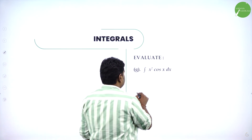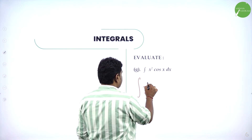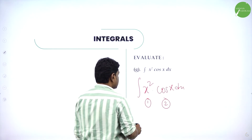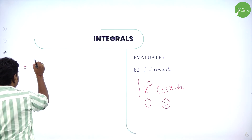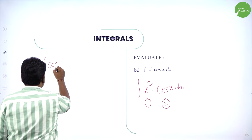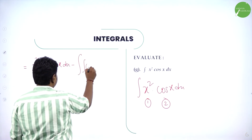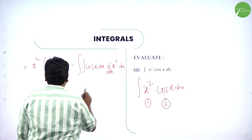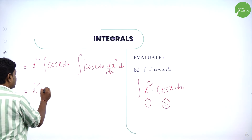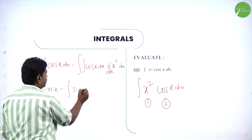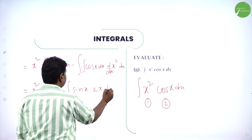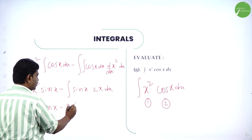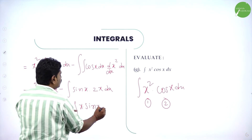Now: integration of x²·cos(x) dx. First function is x², second function is cos(x). Apply parts: x² into integration of cos(x) dx, minus integration of cos(x) dx into d/dx of x². Integration of cos(x) is sin(x), derivative of x² is 2x. So: x²·sin(x) minus integration of sin(x)·2x dx. Take 2 out: x²·sin(x) minus 2·integration of x·sin(x) dx. Again use parts.